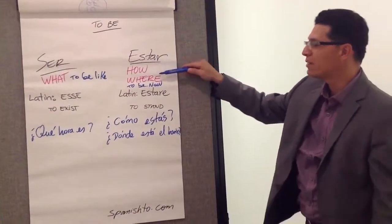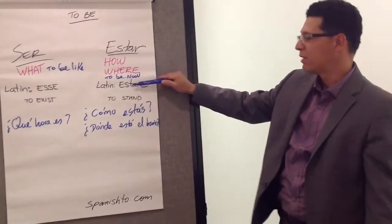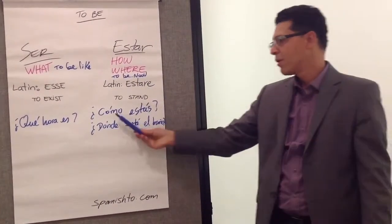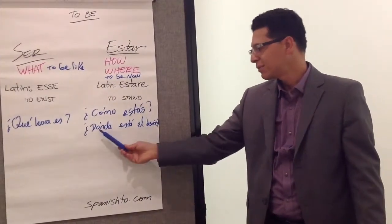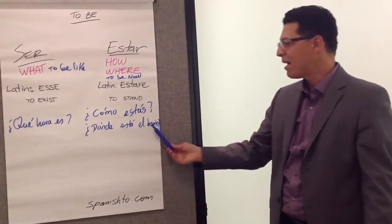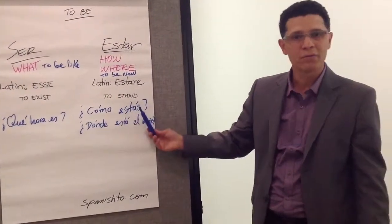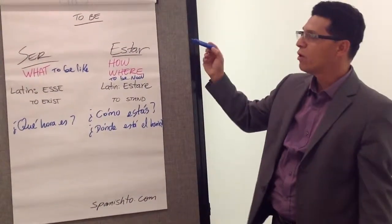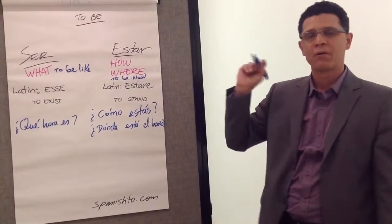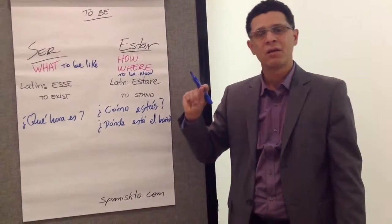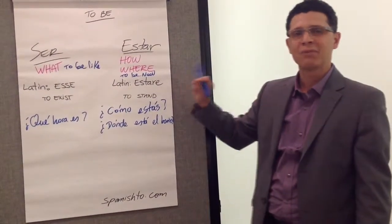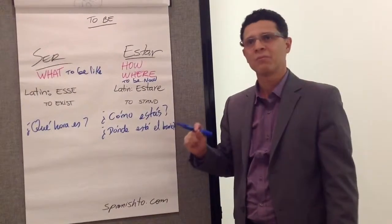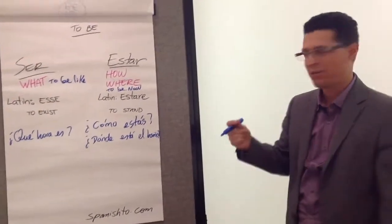To summarize: estar means how or where to be now, with its origin in Latin as estar. Examples include ¿Cómo estás? — how are you? — and ¿Dónde está el baño? — where is the bathroom? So, number one takeaway: the definition of the verb to be must be precise in Spanish. We'll go to the second point in our next video.